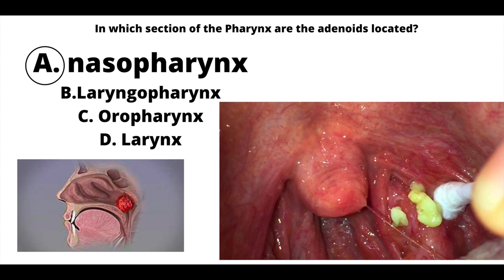Let's talk about why the other answers are not correct. The top of your throat starts off with the pharynx and then it moves on to the larynx. Your pharynx divides into three sections: the nasopharynx — exactly where the adenoids are located — then the oropharynx, which does have tonsils but they are not referred to as adenoids, then the laryngopharynx, and then the larynx. The whole passageway from your nose and mouth all the way to the exit of your body — you must know this passageway.